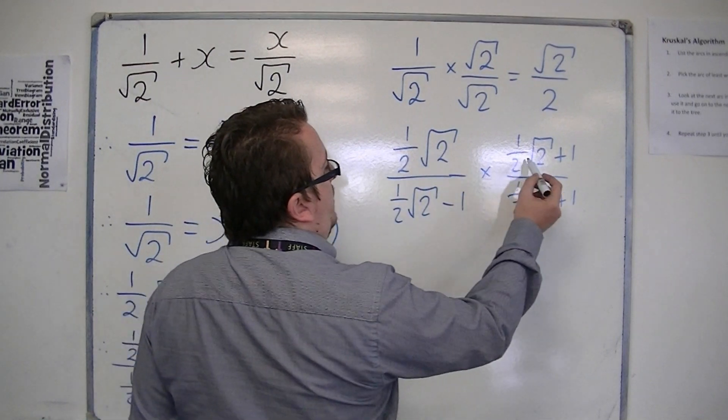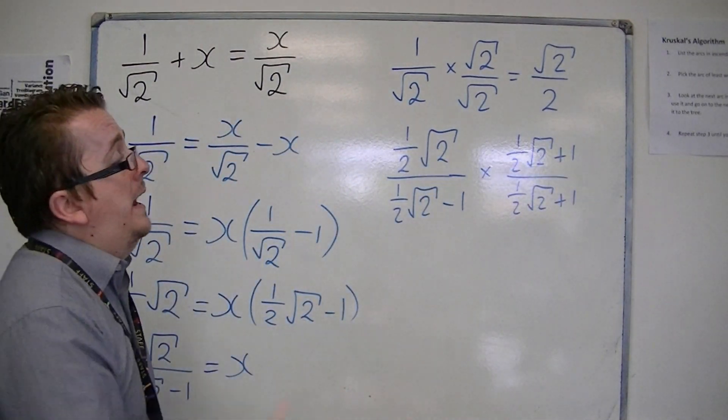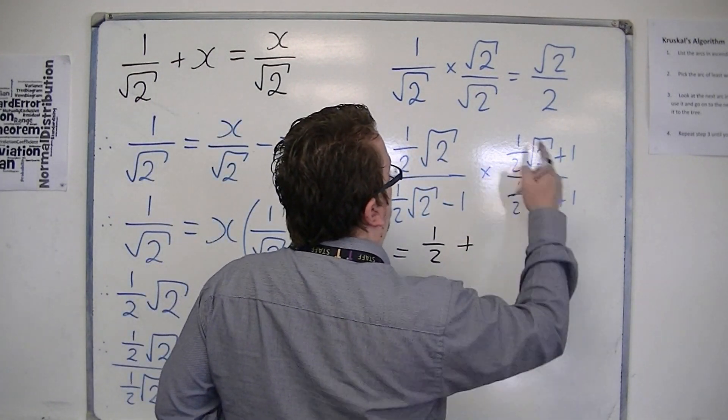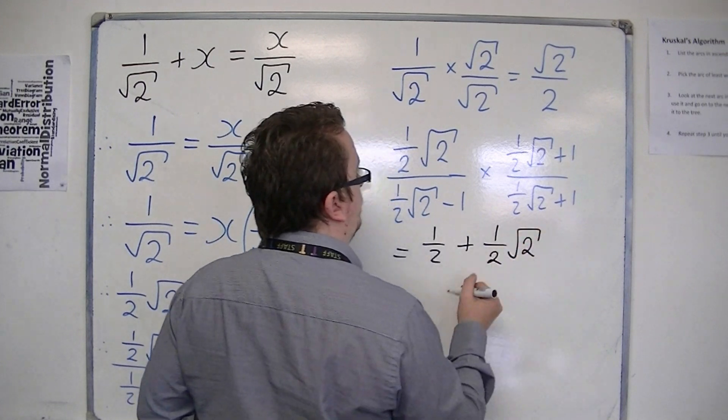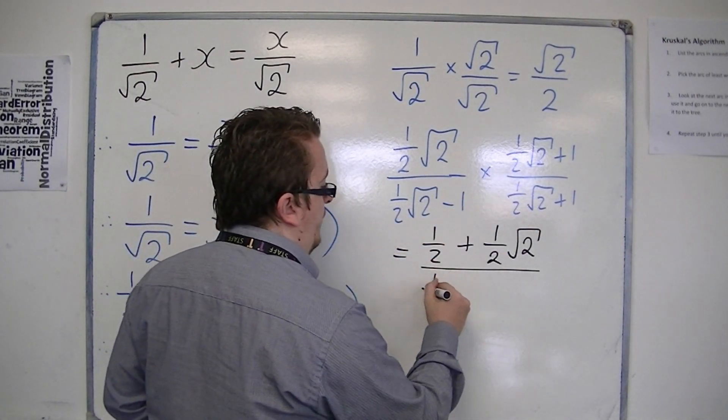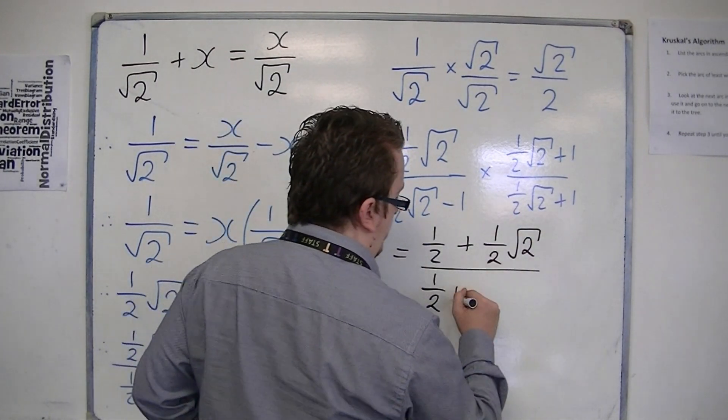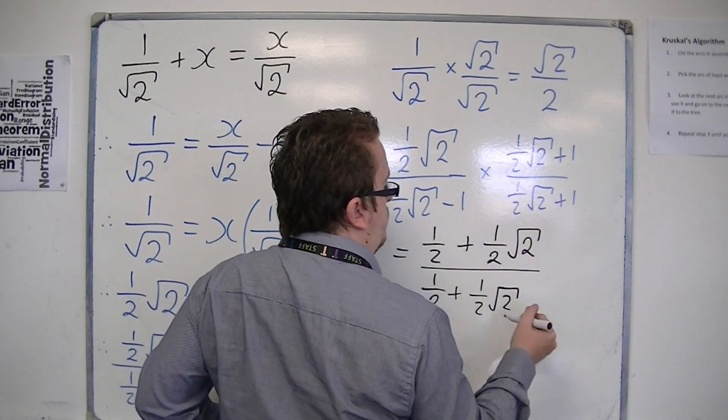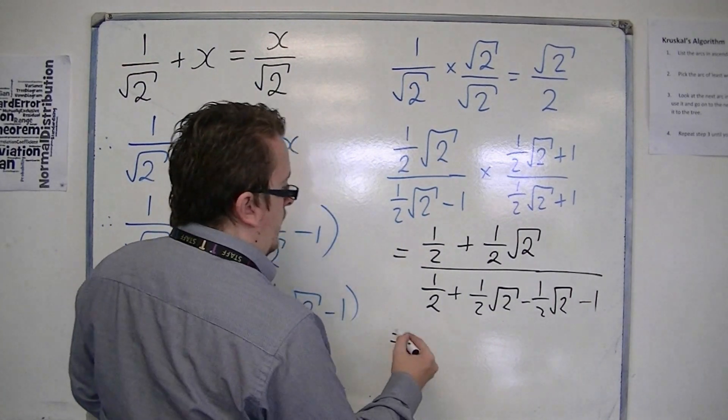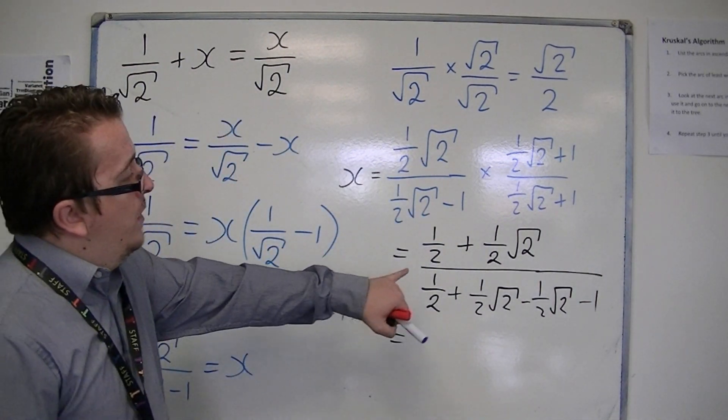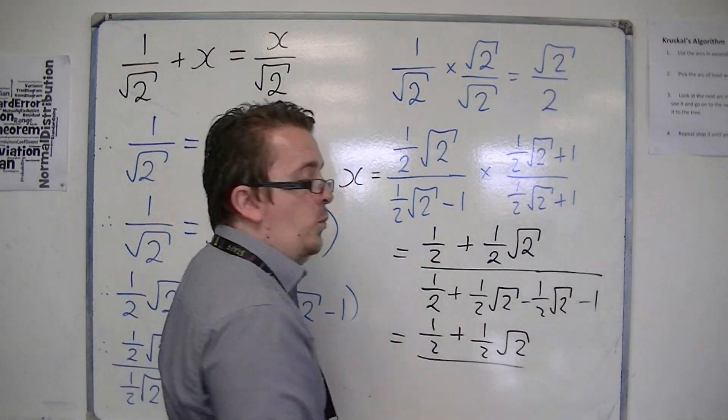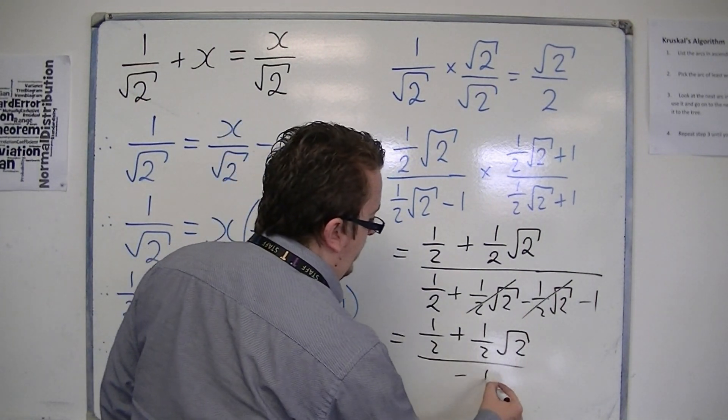Now I'm going to have 1 half root 2 times 1 half root 2. So that's 1 half times 1 half is a quarter, and root 2 times root 2 is 2. So a quarter times 2 is a half, so it's 1 half plus 1 half root 2. And then on the denominator, we've got 1 half root 2 times 1 half root 2, which we know already is 1 half. We've got 1 half root 2 times 1, and minus 1 times 1 half root 2. So on the numerator, we've got 1 half plus 1 half root 2, and on the denominator we have 1 half take away 1, because these two pieces cancel each other out, so you get minus 1 half on the denominator.